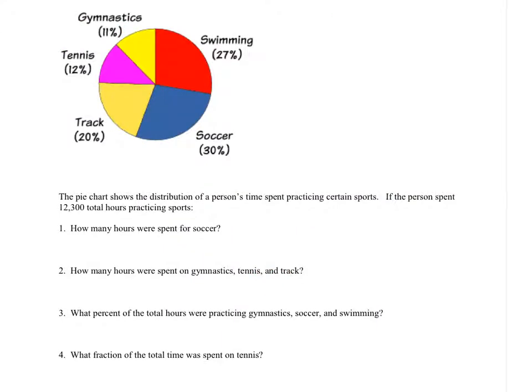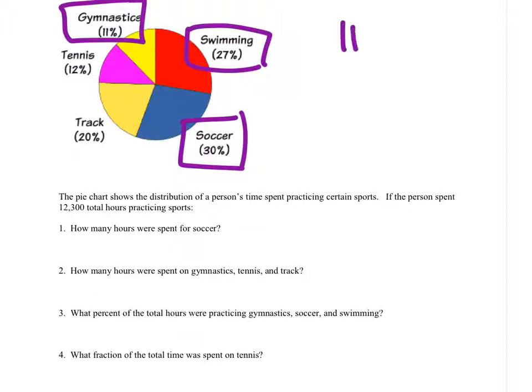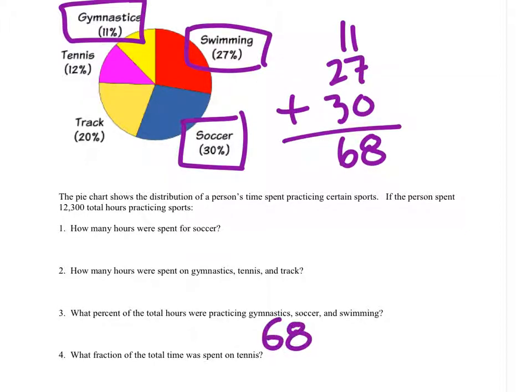Number three, what percent of the total hours were practicing gymnastics, soccer, and swimming? So let's look at those: gymnastics, soccer, and swimming. I suppose not all at the same time, but if we added all those percentages together, that would tell us the percent of the total hours. So we have 11 plus 27 plus 30, and we're just going to add these together. Eight and, oh man, six. That would be 68% of those hours were gymnastics, soccer, and swimming.